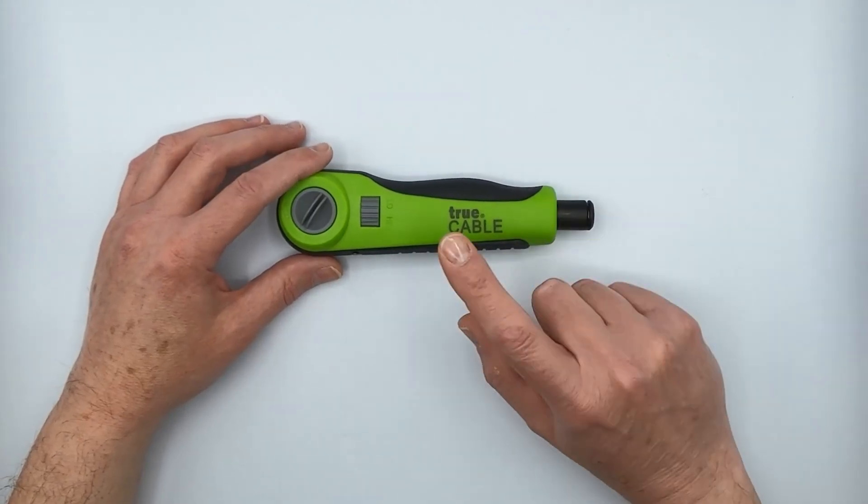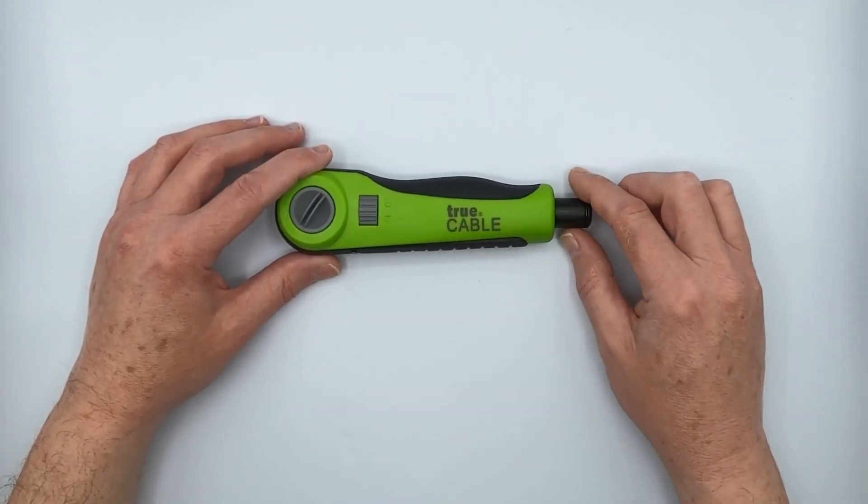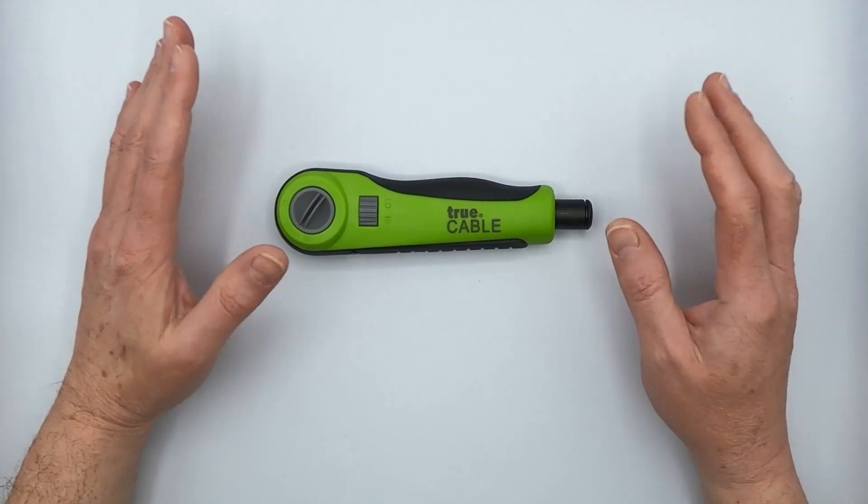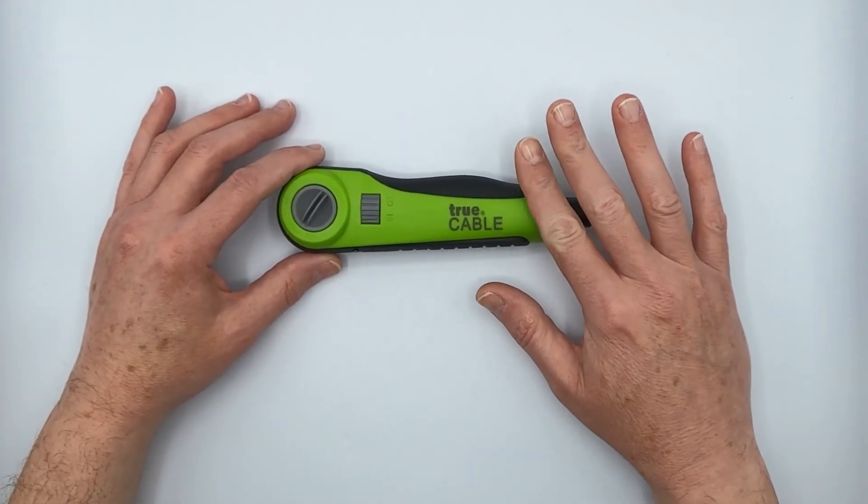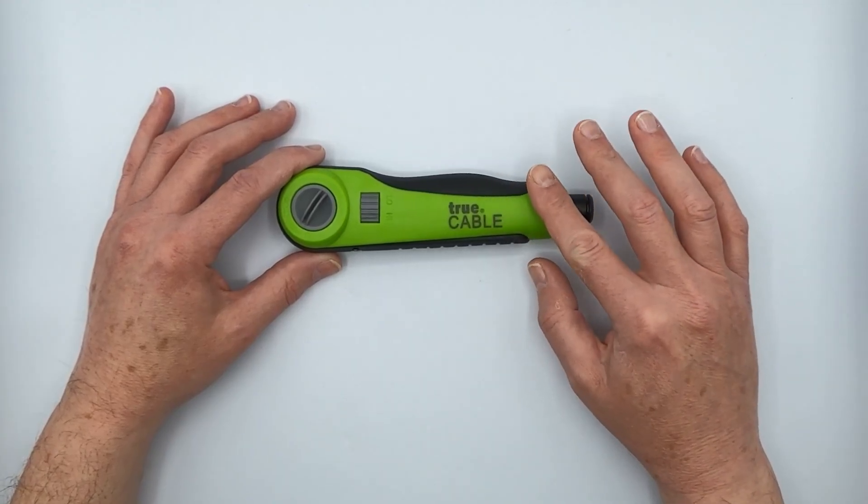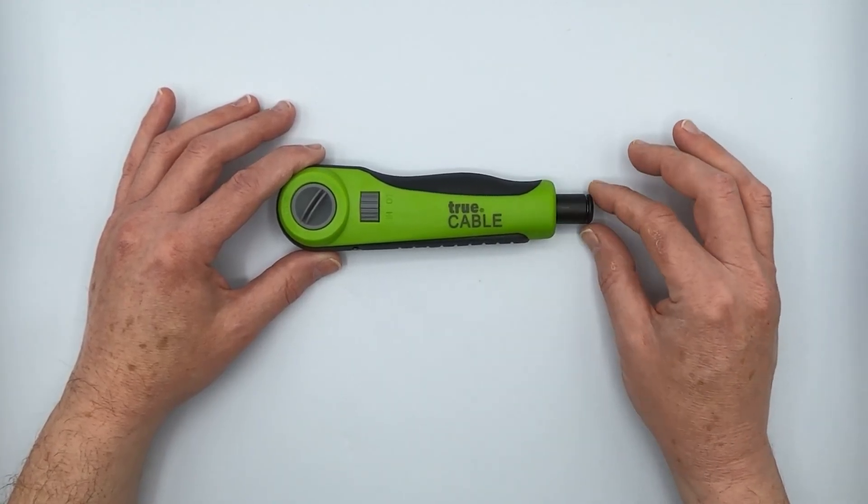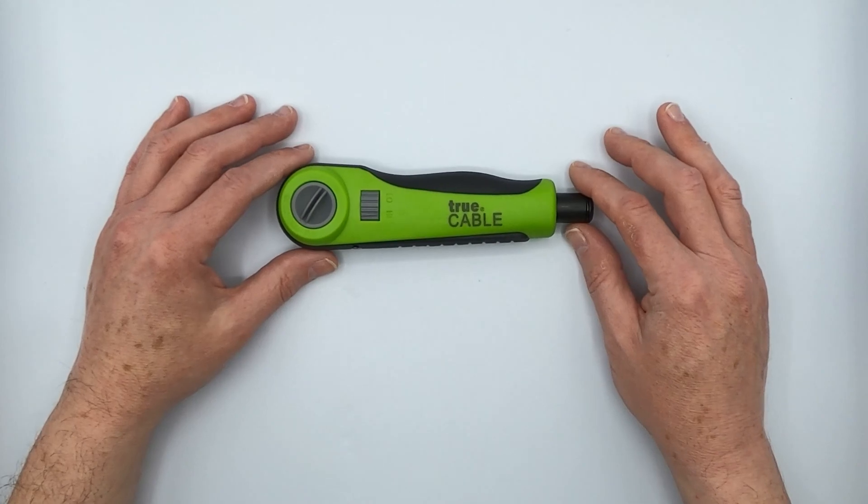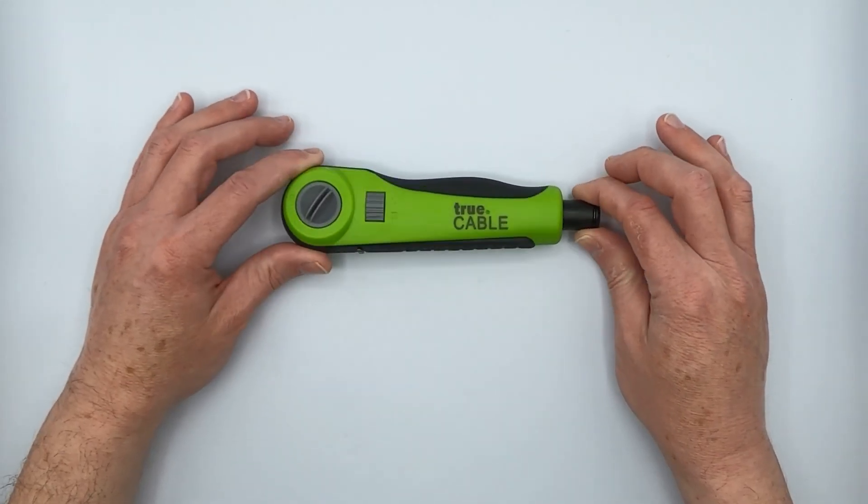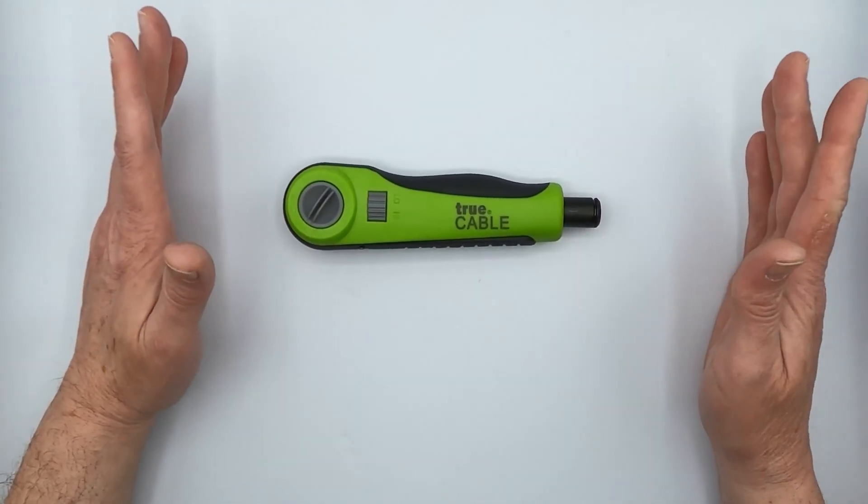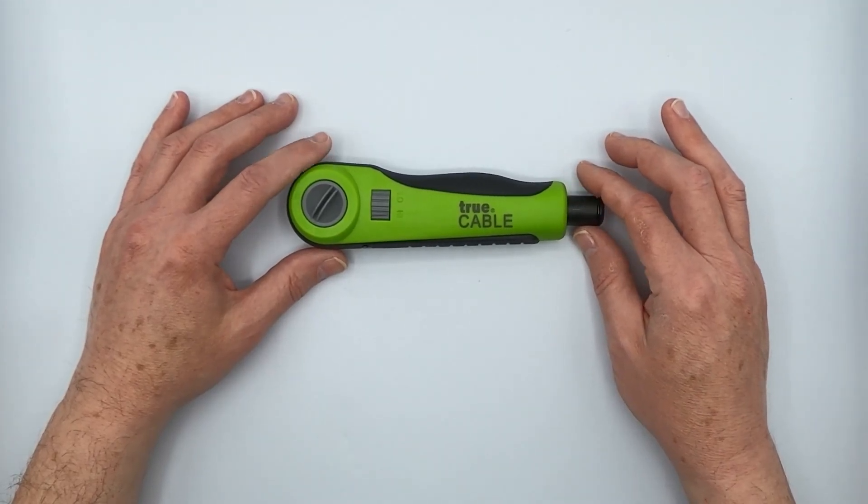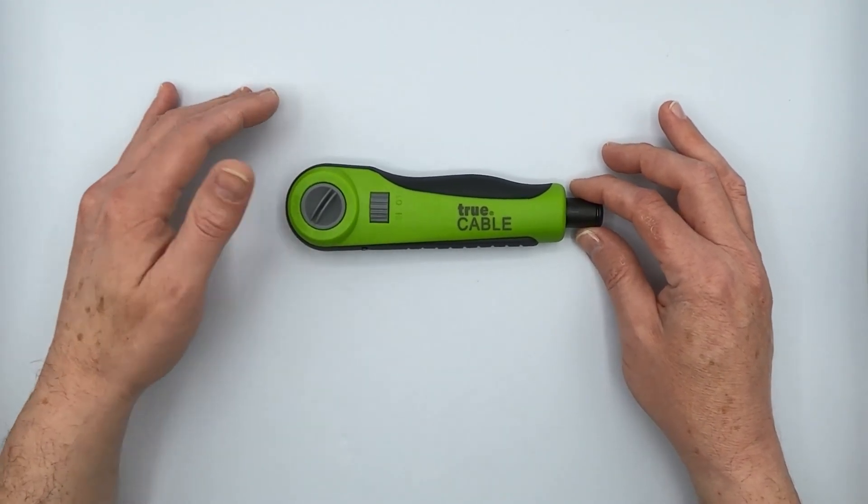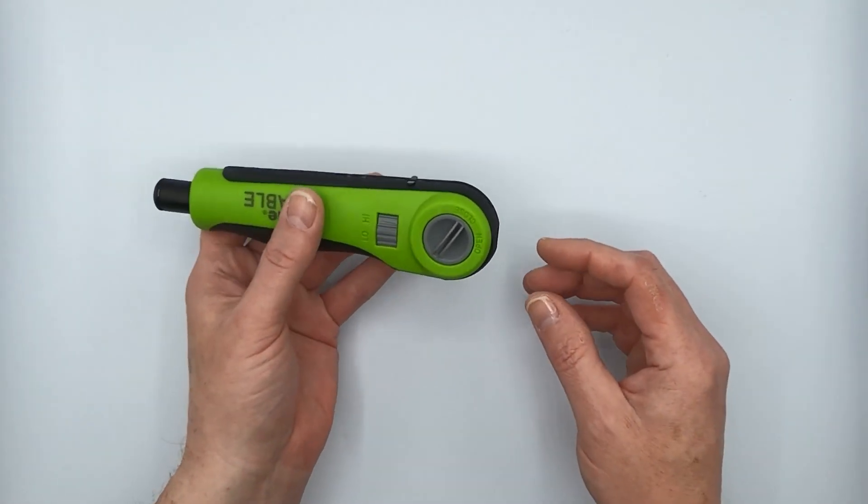This is our True Impact 110 or 66 depending on the blade you put in it, impact punchdown tool. And we do supply a 110 blade double-ended with this guy because that's the most common punchdown that you find. This tool is used to punch down patch panels and it's also used to punch down keystone jacks. So let's go over some of the features here.